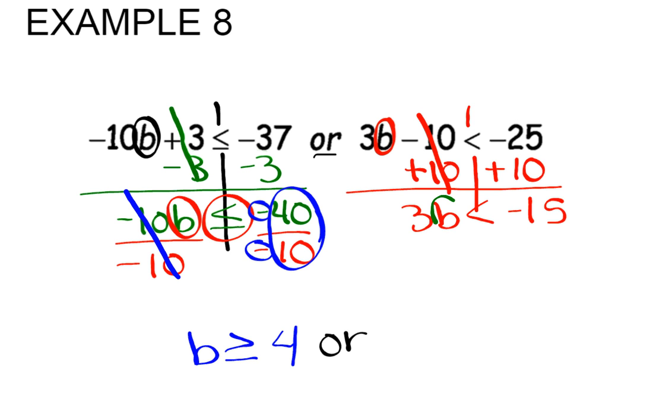We are then going to solve for the variable B by dividing by the coefficient 3. I am not going to flip the inequality symbol because what I'm dividing by is a positive number. So that's going to give us B is less than because the symbol stays the same. A negative divided by a positive is a negative. 15 divided by 3 is 5.